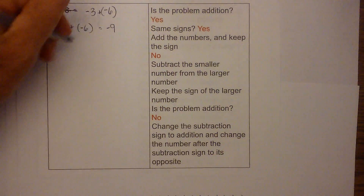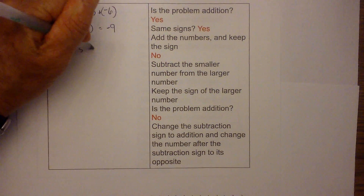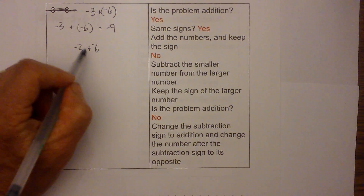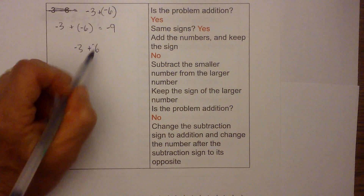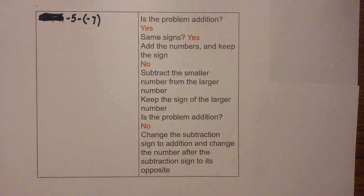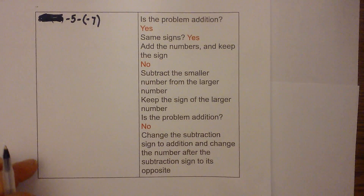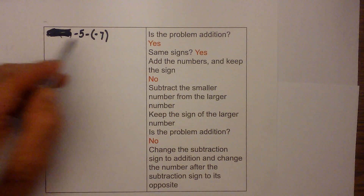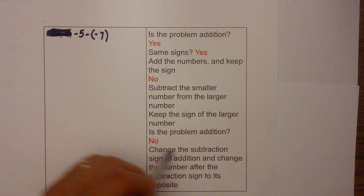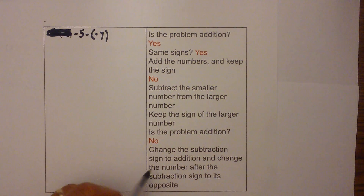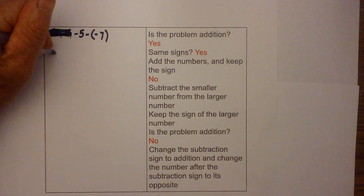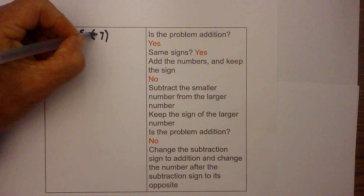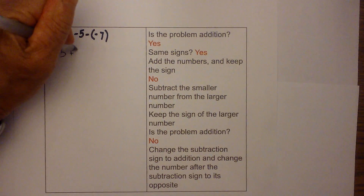To summarize: whenever you have a subtraction problem, change the subtraction sign and the number right after it becomes its opposite. Let's work one more problem. We have another subtraction problem, so I'm going to rewrite it. Is the problem addition? No. Change the subtraction sign to addition and change the number after the subtraction sign to its opposite. So negative five minus negative seven becomes negative five plus positive seven.